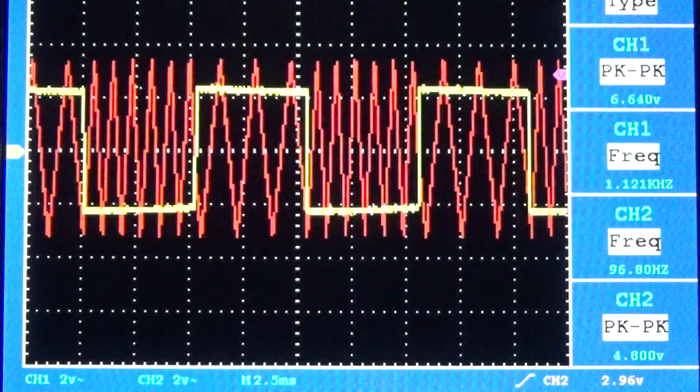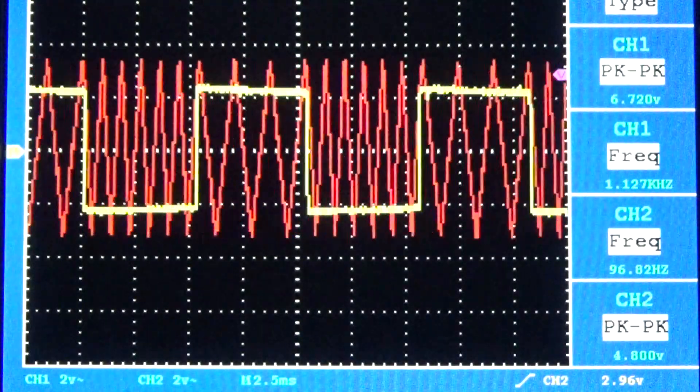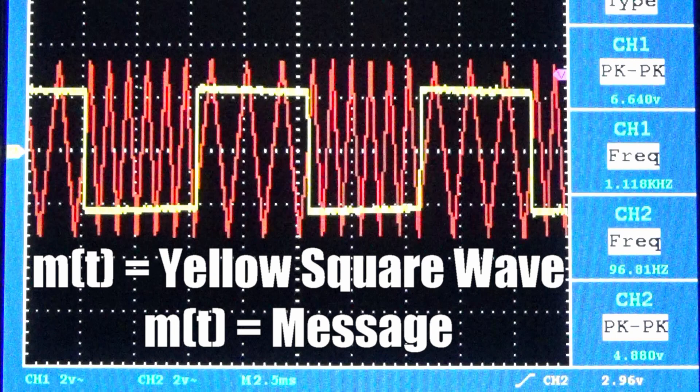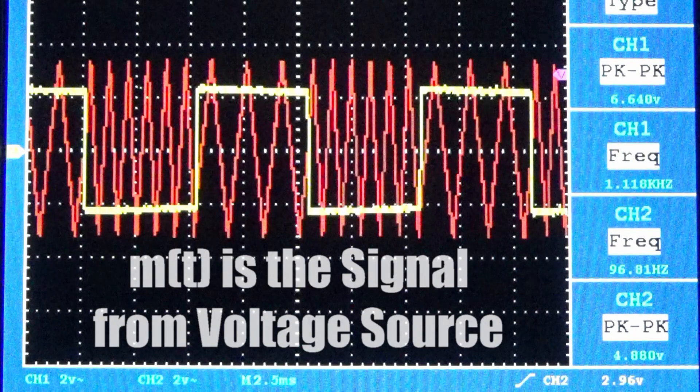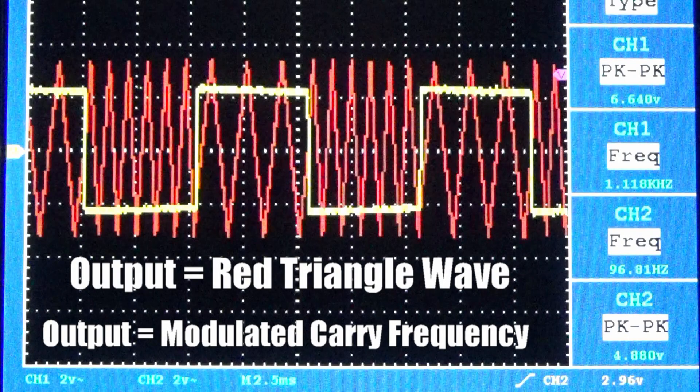Let's take a look at the message and output signal on the oscilloscope. The message signal is the yellow square wave. The message is generated from the voltage source. The output is the red triangle wave which is the frequency modulated carry frequency. This is generated internally in the VCO.